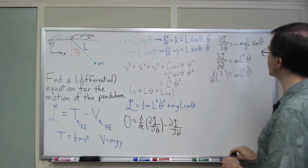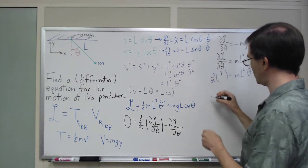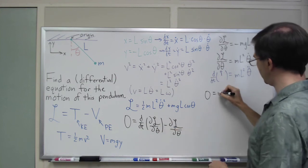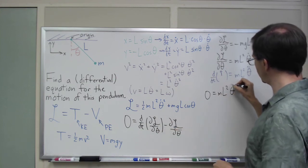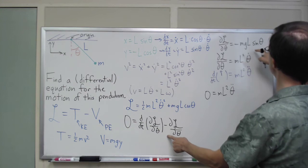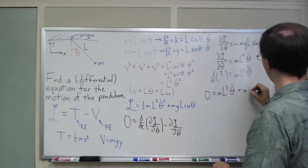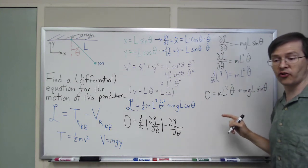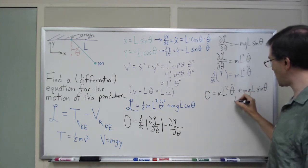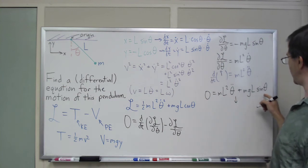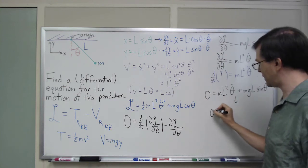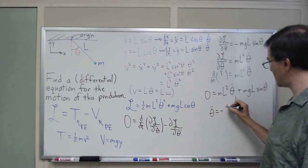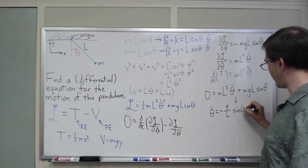So the Euler-Lagrange equations then tell me that zero equals that mL squared theta double dot minus this. So, plus mgL sine of theta. Or if I want to solve for the second derivative, I could solve for that by dividing by mL squared and subtracting, and I get that theta double dot equals, what is this? This is minus g over L times sine of theta.